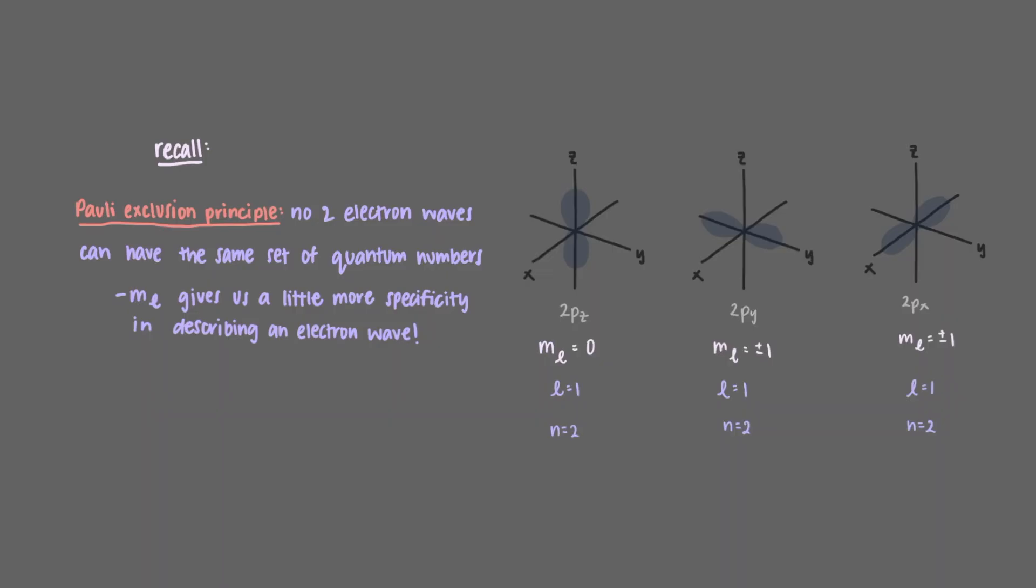So for our 2P electrons, there are three possible orbitals. But this still doesn't explain why there is a maximum of six possible 2P electrons. For that, we will still need one more quantum number, but we'll talk about that in the next video.